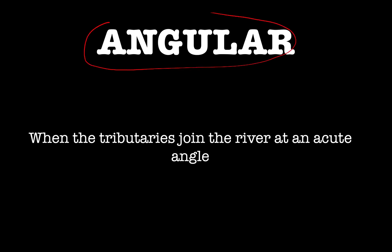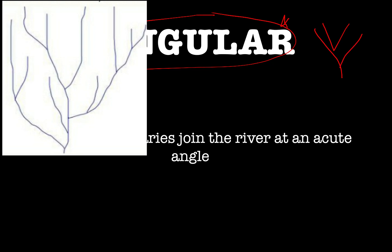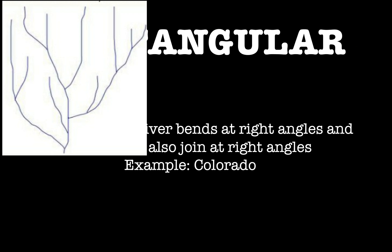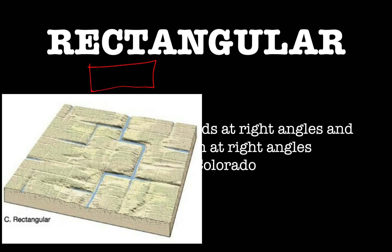Next is the angular pattern. Breaking down the word: angular means acute angle or angle. In the angular pattern, tributaries join the main river at an acute angle, forming an angular shape — these are known as the angular drainage pattern.